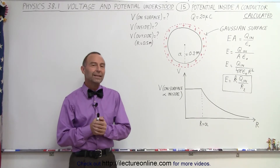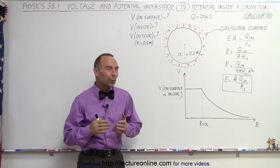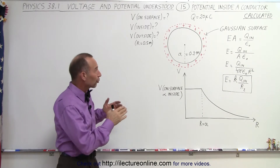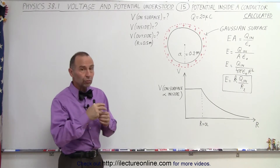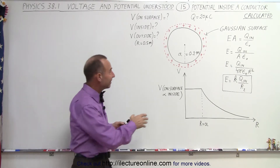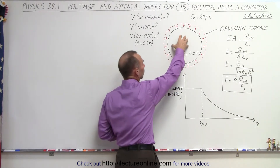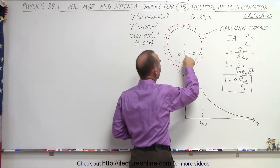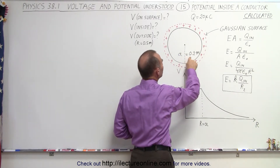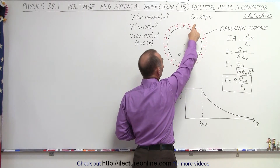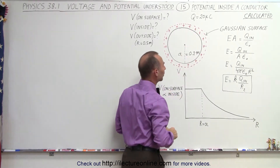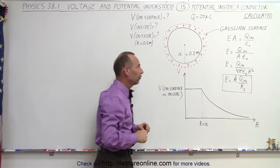Welcome to ElectronLine. Here we're going to try to determine the potential, the voltage, inside a conductor with a radius of 0.2 meters that carries a charge of 20 microcoulombs on the surface.